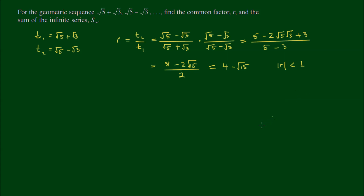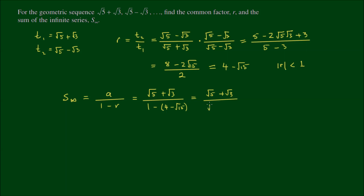S infinity equals a divided by (1 minus r): (root 5 plus root 3) divided by (1 minus (4 minus root 15)). Simplifying the denominator: 1 minus 4 plus root 15 equals root 15 minus 3. So we have (root 5 plus root 3) divided by (root 15 minus 3). We multiply top and bottom by the conjugate of the denominator: (root 15 plus 3).